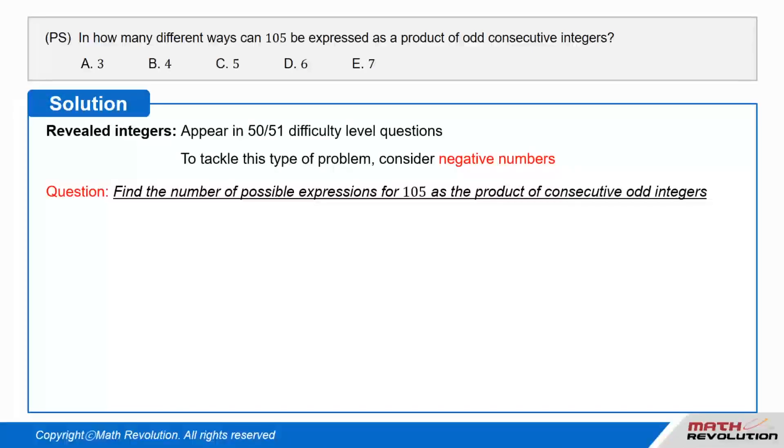Solution. We need to find the number of possible expressions for 105 as the product of consecutive odd integers. We can factor 105 as 3 times 5 times 7, where 3, 5, and 7 are consecutive odd integers.